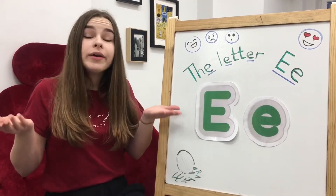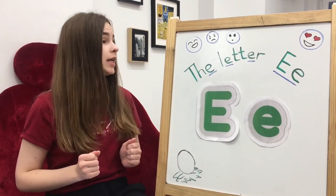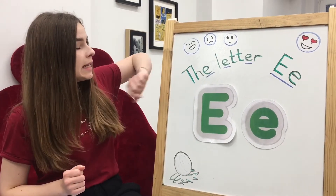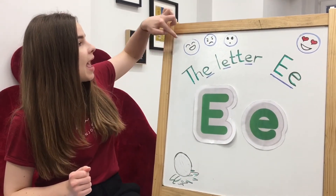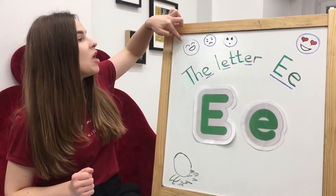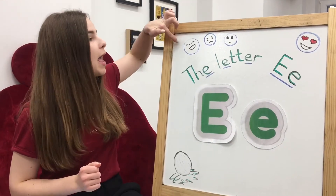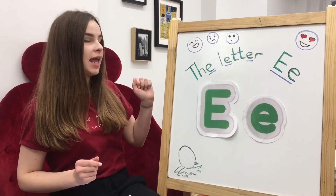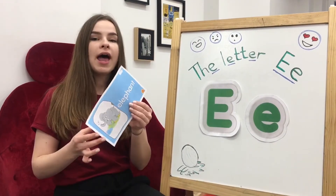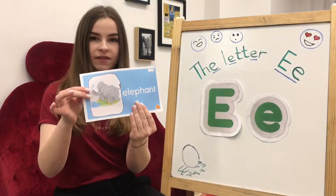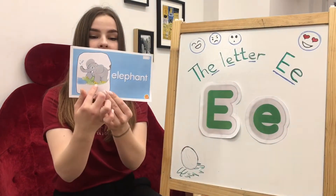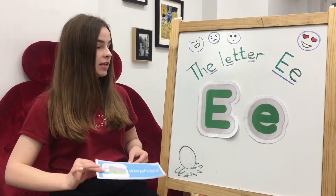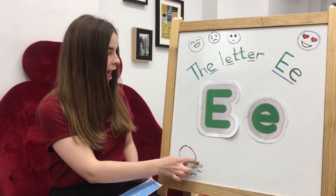Where can we find the letter E? Look! E sound E, E, E. Emotions, emotions. E is for elephant, elephant. E is for egg.